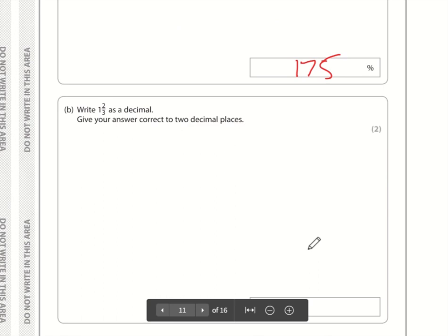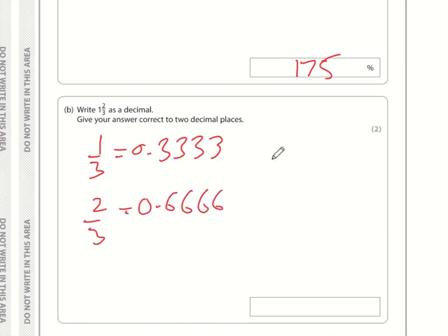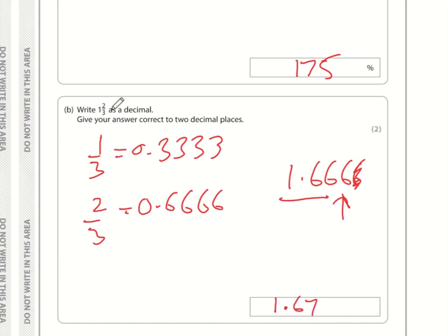Part b: write one and two thirds as a decimal. One third is 0.3333 recurring, so two thirds is 0.6666 recurring, making one and two thirds equal to 1.6666 recurring. To two decimal places, the third decimal is greater than 5, so round up: 1.67. If unsure, remember the fraction line means divide — type 2 divided by 3 into your calculator to get 0.6 recurring.